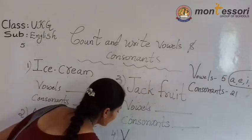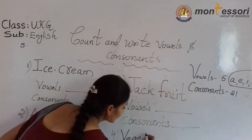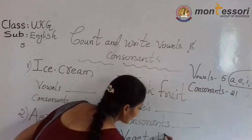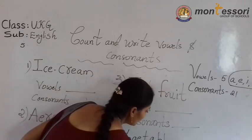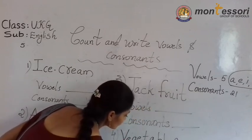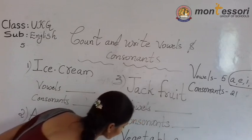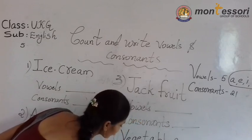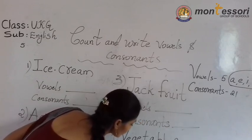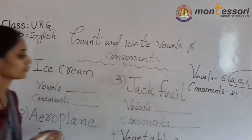V, E, G, E, T, A, B, L, E, S — Vegetables. Vowels. Consonants.